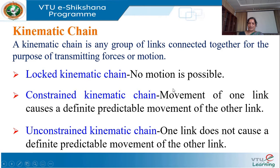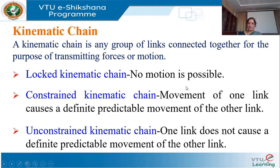Kinematic pairs are classified based on the nature of contact, based on mechanical constraint, and also based on the contact between the two links. Based on the nature of contact, they are classified as lower pair and higher pair. In the lower pair, there is surface contact between the two links. In the higher pair, there is line or point contact between the two elements.